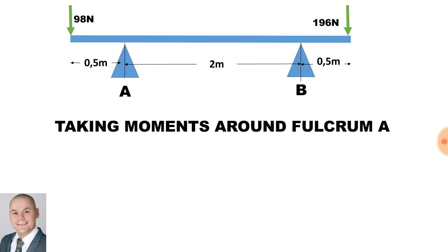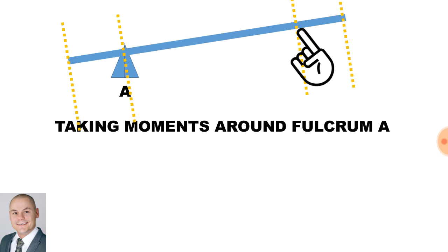There are two parts to this calculation. In the first part, we are taking moments around Fulcrum A. There are four areas on the beam where forces are acting, consisting of upward forces and downward forces. Because we are taking moments around Fulcrum A, we will push up at point B.